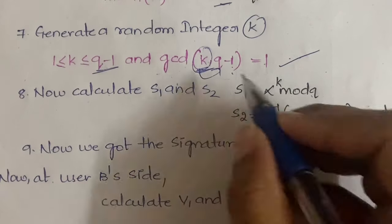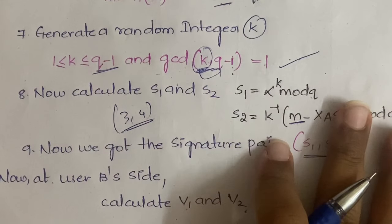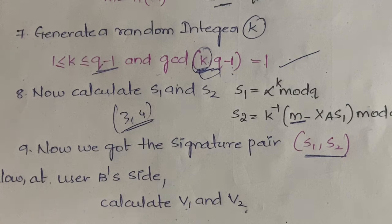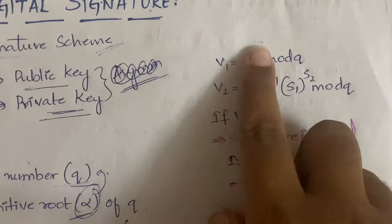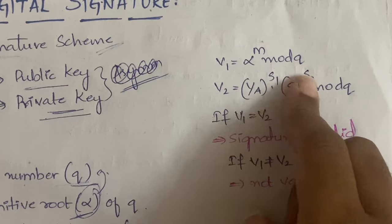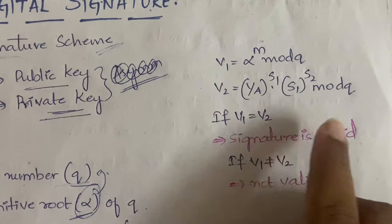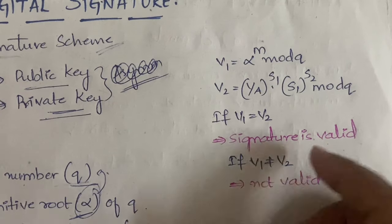After computing s1 and s2, you obtain the signature pair (s1, s2). On the receiver's side — user B — you need to calculate v1 and v2: v1 = alpha^m mod q, and v2 = ya^s1 × s1^s2 mod q. If v1 equals v2, the signature is valid.